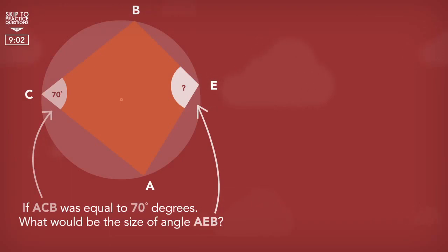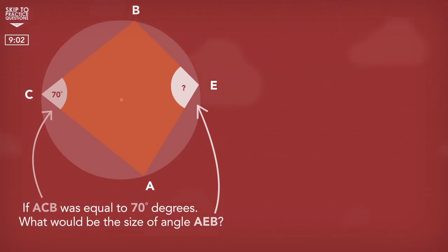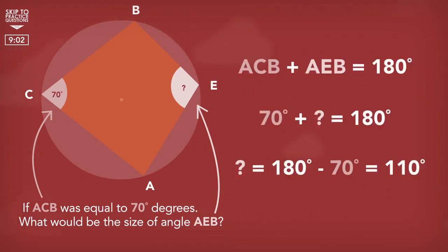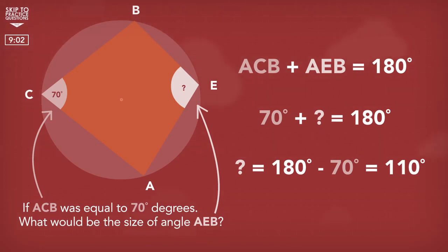A question we could have here is: if angle ACB was equal to 70 degrees, what would be the size of angle AEB? We now have a cyclic quadrilateral. The angles ACB and angle AEB must equal 180 degrees. So angle AEB equals 180 minus 70, which is 110 degrees.